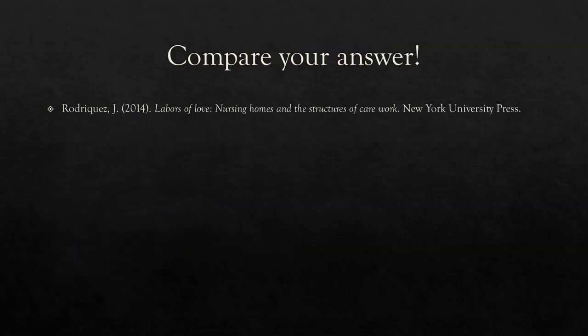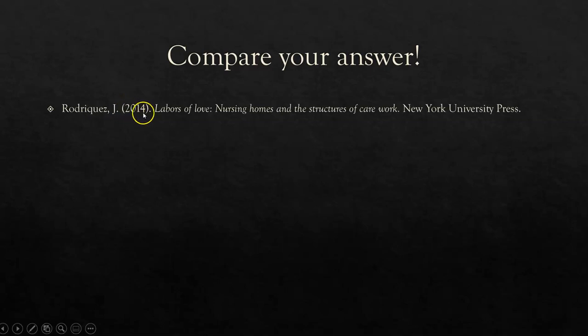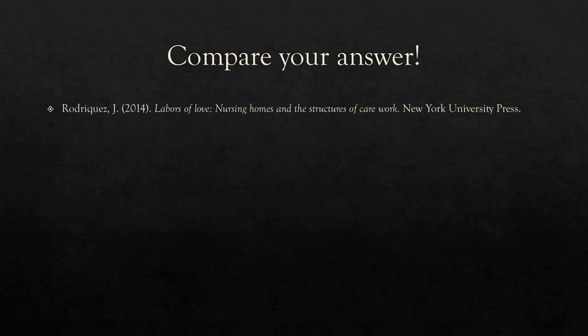Assuming you paused the video and gave that a try, now it's time to compare your answer. Take a look at what you've written and compare it against what you see on the screen. You should have: Rodriguez comma J. period space bracket 2014 close the bracket period. Here's the title: 'Labors of Love: Nursing Homes and the Structure of Care Work.' Capital L on labors, capital N on nursing. Period, space, and then the name of the publisher, New York University Press. Congratulations — you have just created your first entry for a book.